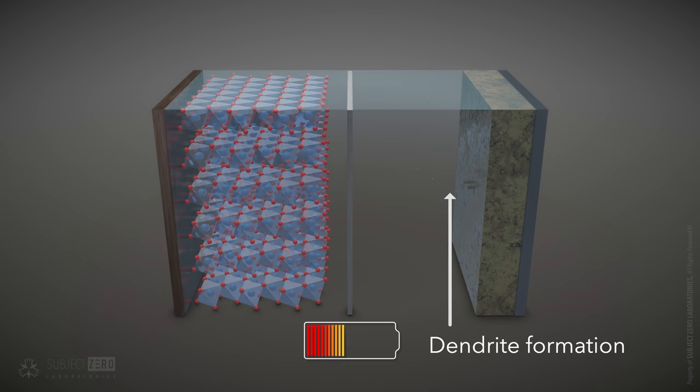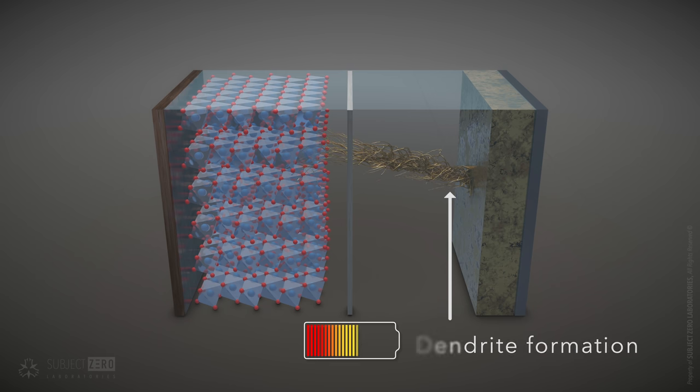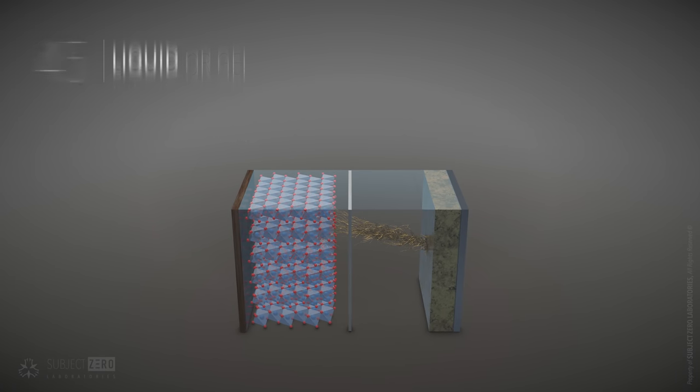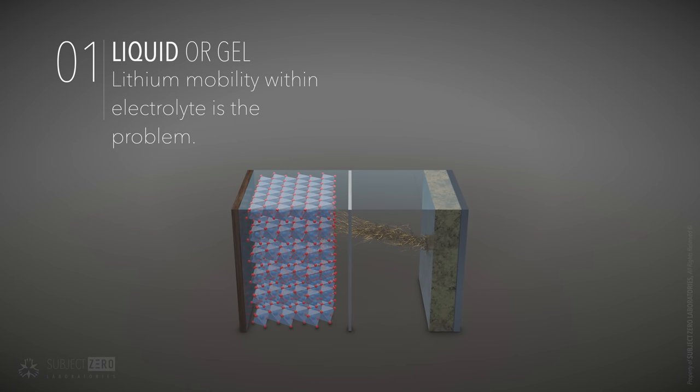Dendrite penetration is a big challenge to current battery technology. They form after many battery cycles. Basically, while a battery is charging, lithium rearranges itself in an uneven manner, forming extensions called dendrites, reaching out towards the cathode of the battery. This happens because liquid electrolyte enables such flexibility.